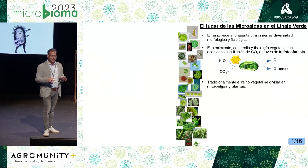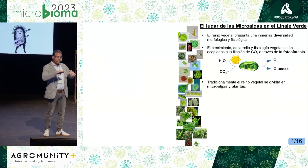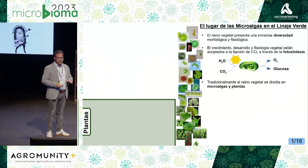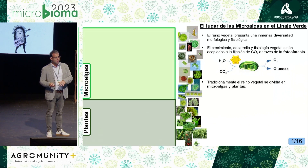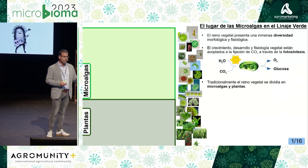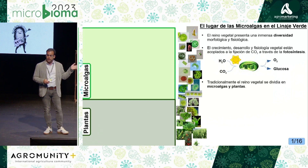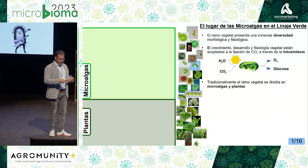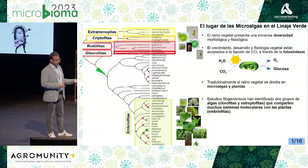Traditionally, the plant kingdom has been divided into two very distinct groups, or so it was believed: on the one hand, there were plants, and on the other hand, there were microalgae. However, with the recent development of OMICS techniques, initially genomics, it has allowed us to generate the genomes of all plant species and compare them, revealing that what we thought was very different was not so much.